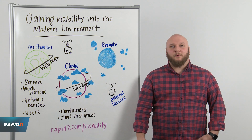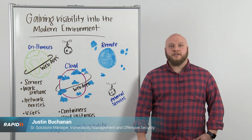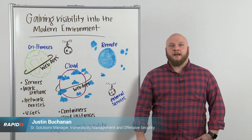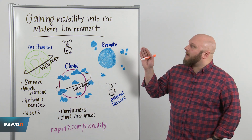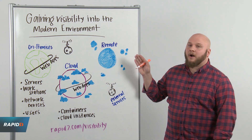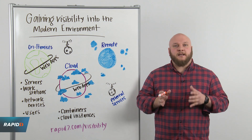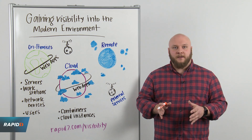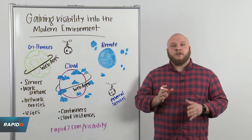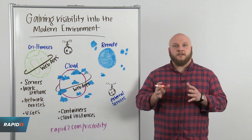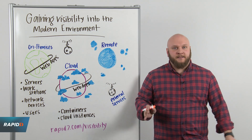Hi, and welcome to this week's Whiteboard Wednesday. My name is Justin Buchanan, Senior Solutions Manager for Vulnerability Management and Offensive Security Solutions here at Rapid7. We're here today to talk about gaining visibility into the modern environment — this expansive, complex, and dynamic environment that we're all wrestling with. We're going to go through some of the major components and talk about the different systems that you should consider integrating with or instrumenting in order to gain visibility.